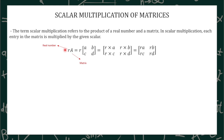In order to do the scalar multiplication, we just need to multiply our real number — such as 1, 2, 3, 4, 5 — to our matrix. So R times A will become RA for our first element, R times B will become RB for our second element, R times C will become RC for our third element, and R times D will become RD for our fourth element.